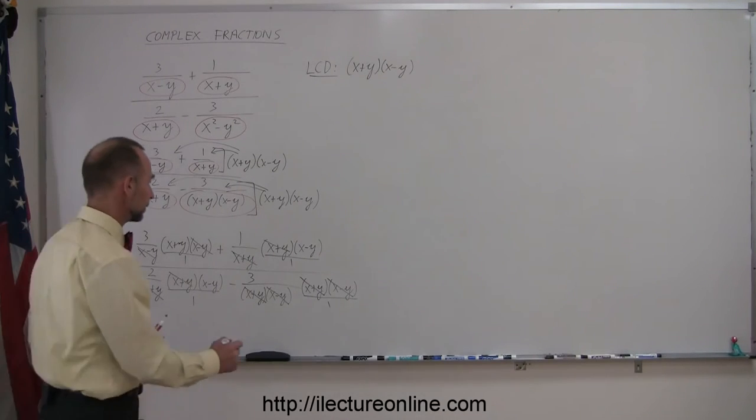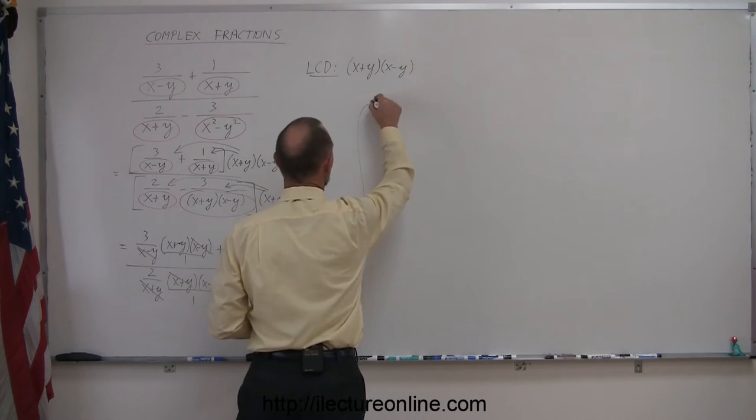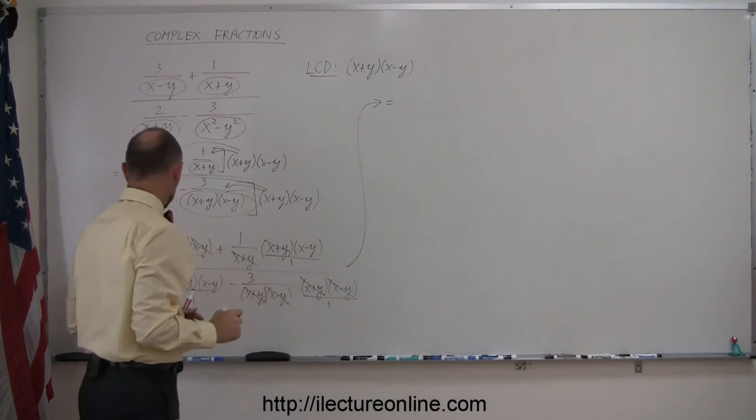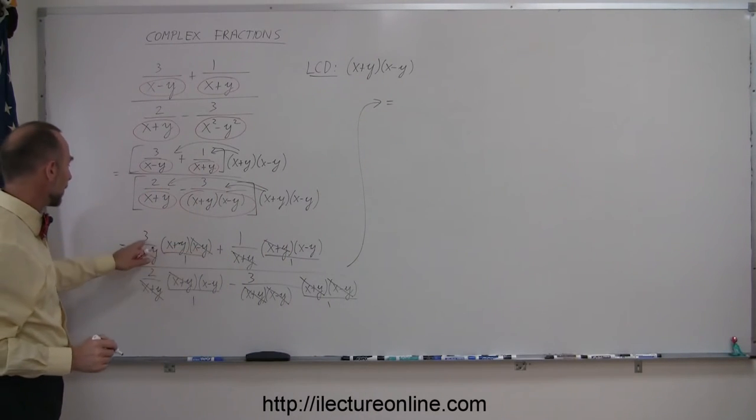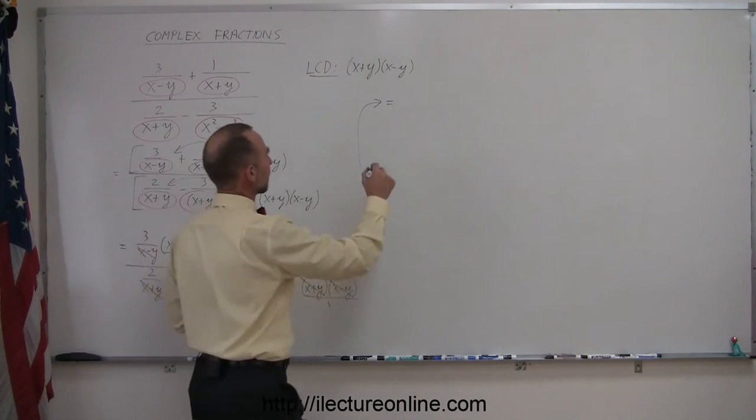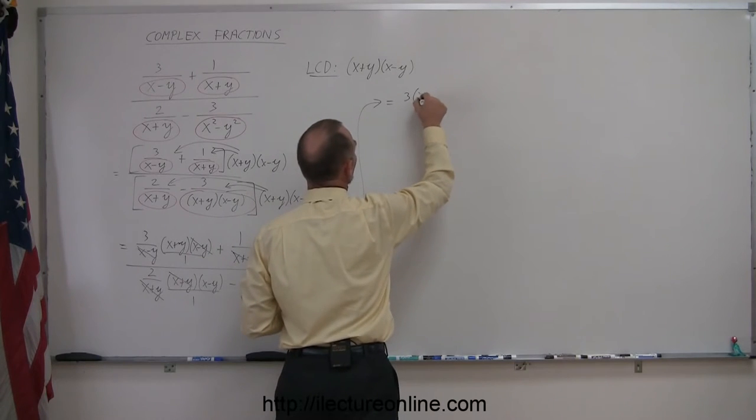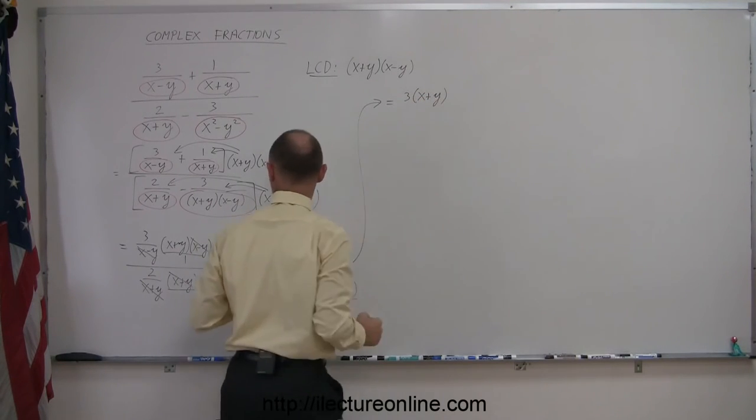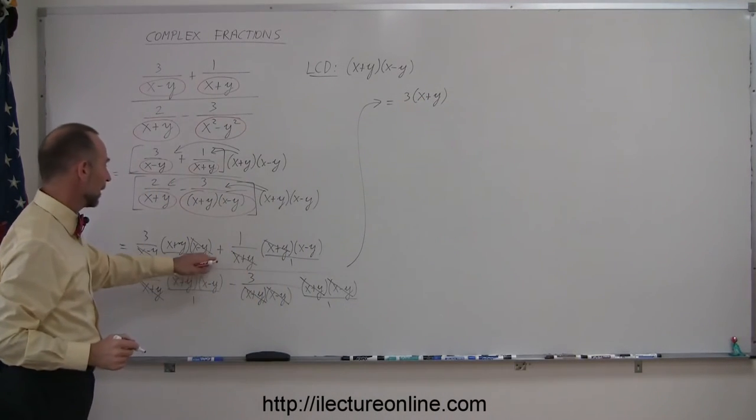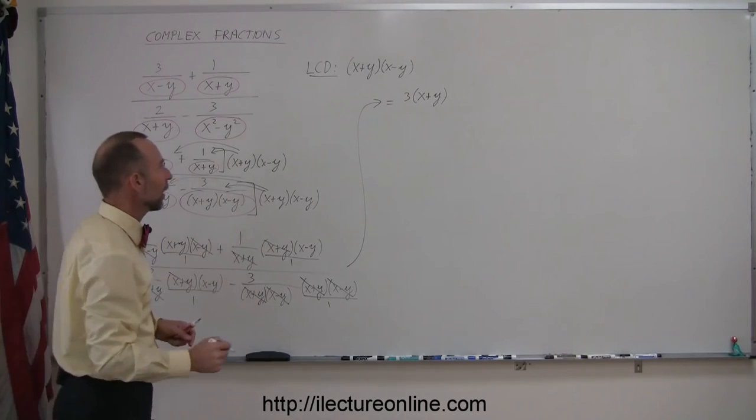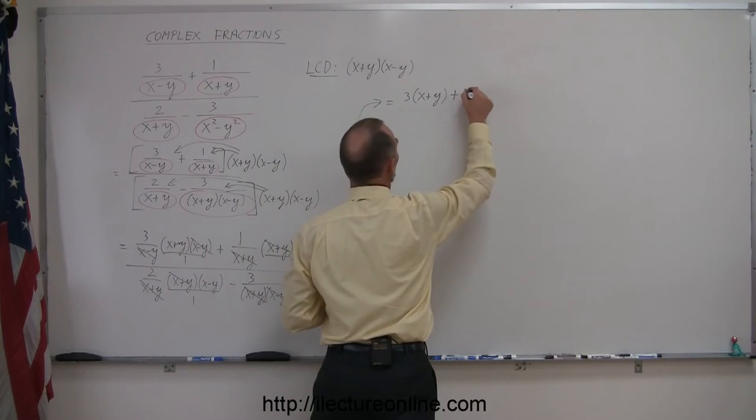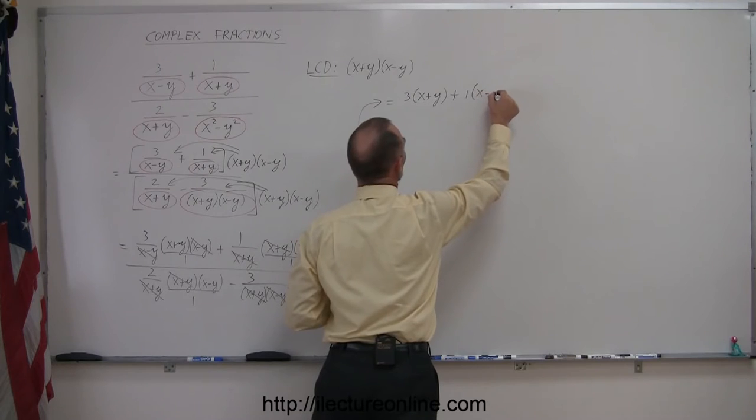Let's see what we have left. Come up here, because we have a little bit more space. So if that's canceled out with that, we have left the 3 times x plus y. And then here we have left a 1 times x minus y, so plus 1 times x minus y.